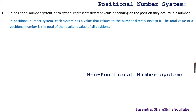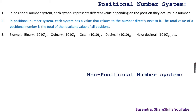According to base, there are different positional number systems. For example: binary is base 2, quinary is base 5, octal is base 8, decimal is base 10, and hexadecimal is base 16.